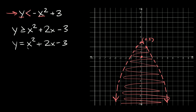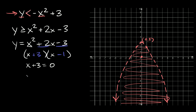There are a bunch of ways to graph this. One way is by factoring to find the zeros. Factoring x squared plus 2x minus 3, we break it into x times x, and we need two numbers that add to positive 2 and multiply to negative 3 — that's positive 3 and negative 1. Setting each factor equal to zero: x plus 3 equals zero gives x equals negative 3, and x minus 1 equals zero gives x equals positive 1. These are the zeros where our parabola touches the x-axis.